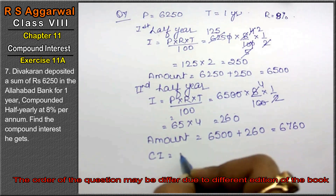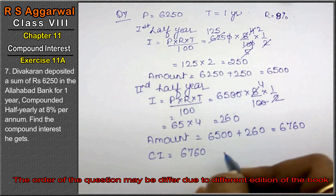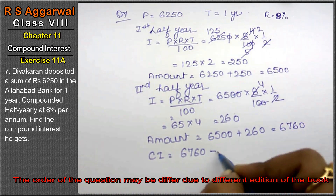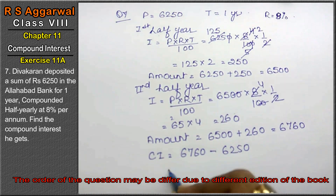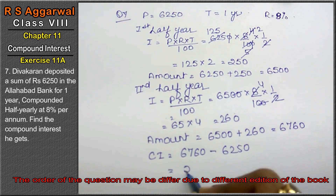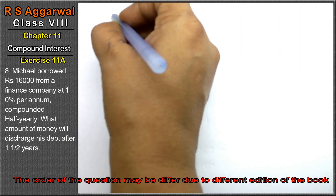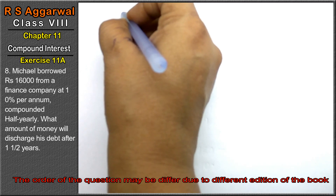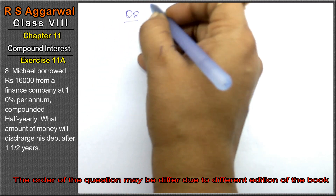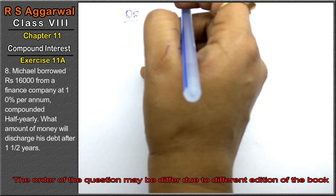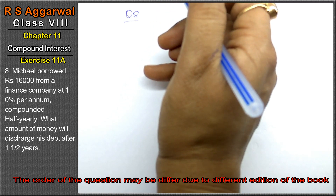Compound interest equals the final amount minus the original principal: 6,760 minus 6,250, giving compound interest of 510 as the answer.